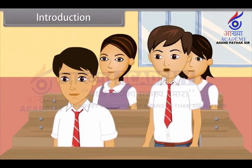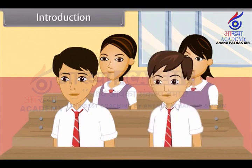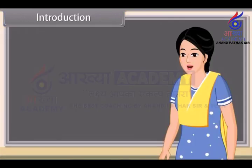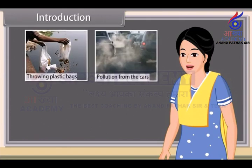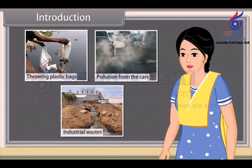How are we making this river polluted? Many of our activities destroy the clean state of rivers, such as throwing plastic bags, pollution from cars, dumping of industrial wastes. Let us explore them in detail and their effects on our environment.